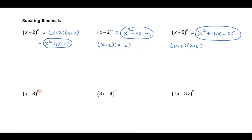So if I have x minus 8 squared, you should be able to just very quickly say, well, that's x squared. Negative 8x doubled is negative 16x, and then negative 8 squared is 64, and you've squared the binomial.